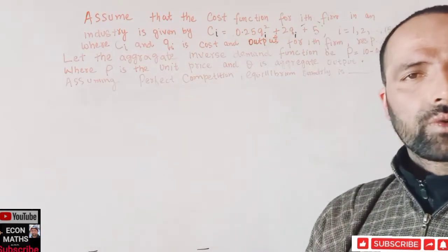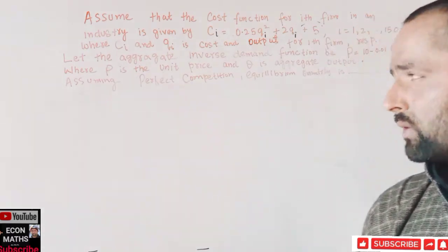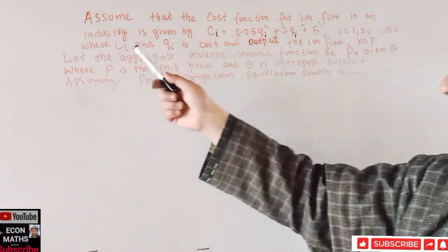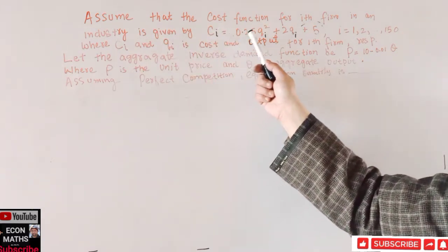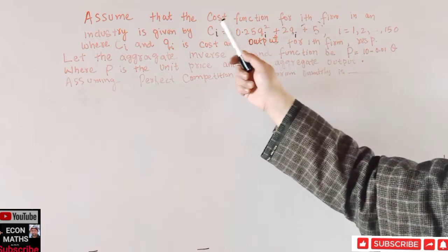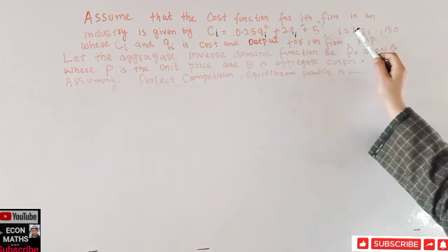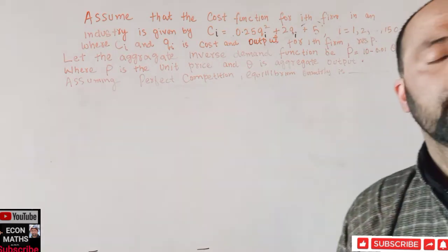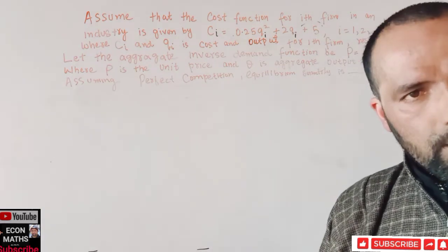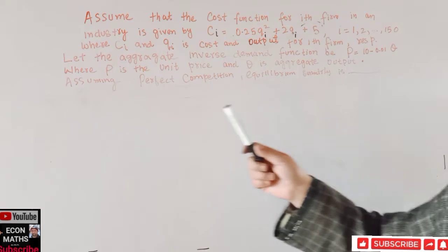In this video we will solve a question from the GATE Economics paper of 2022. The question assumes that the cost function for the ith firm in an industry is given by: C_i = 0.25q_i² + 2q_i + 5, where i ranges from 1 to 150 — meaning we have 150 individual and identical firms in the industry.